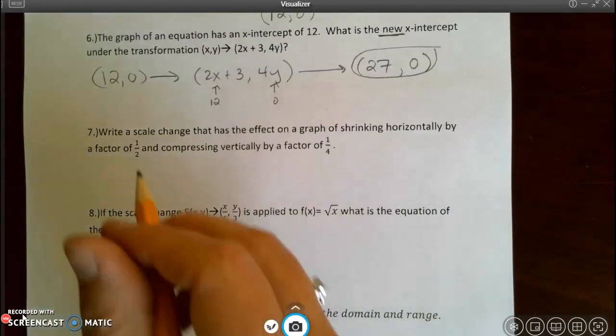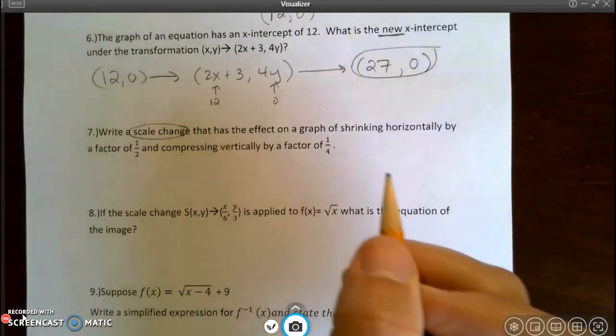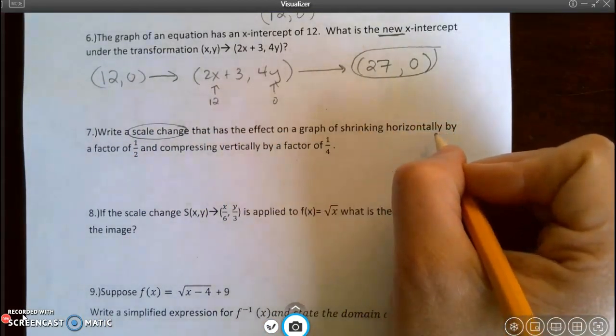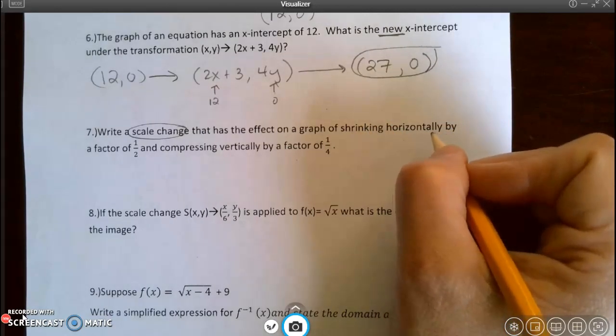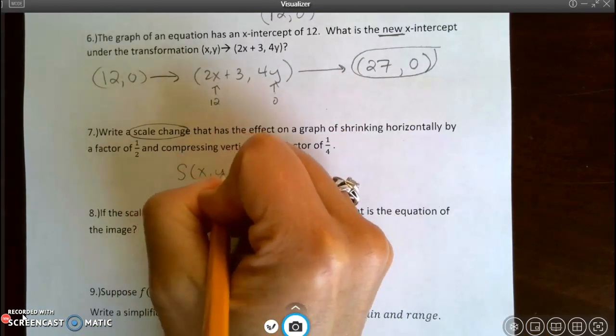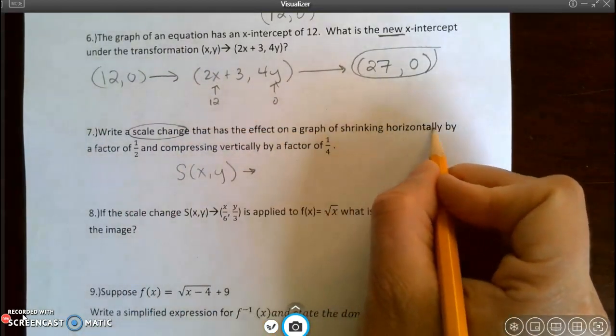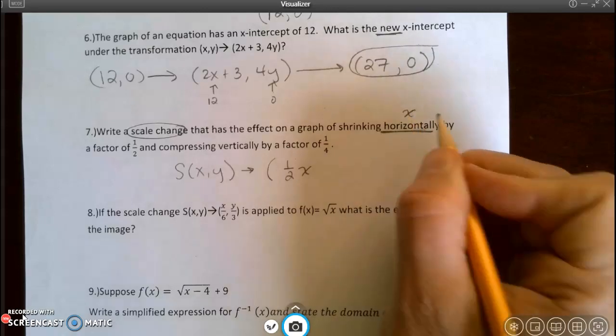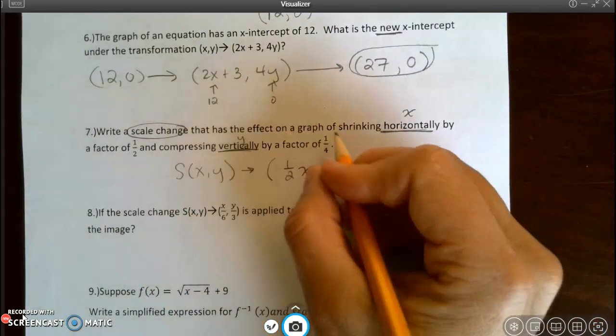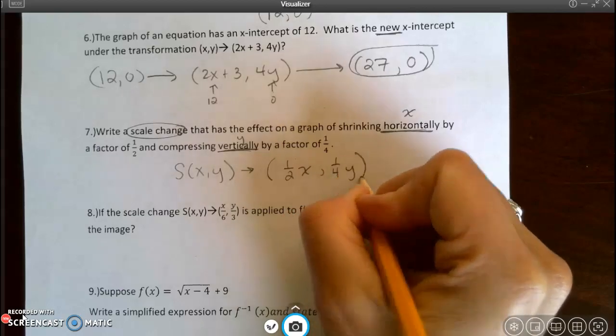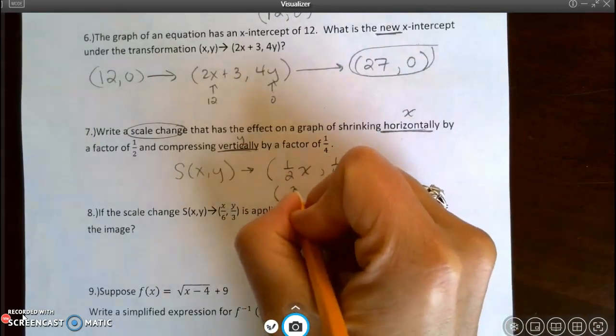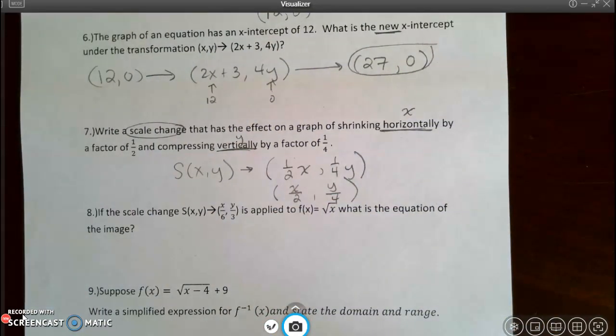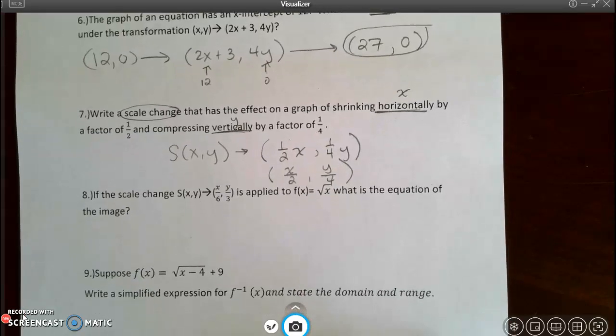Number 7. Write a scale change that has the effect on the graph of shrinking it horizontally by a factor of a half and compressing vertically by a factor of a fourth. Okay, so I'm going to take my original ordered pair and I'm going to shrink it horizontally by a factor of a half. So 1 half times x, that's the horizontal. And vertically is y, 1 fourth y. You could also write it as x divided by 2, y divided by 4. That's another way to write that.